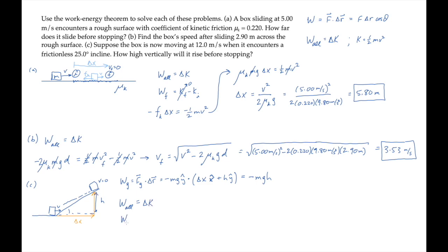From the work energy theorem, we can substitute the work done by gravity. That's the only force doing work on the box as it slides. Zero out the final kinetic energy where the box comes to a rest.